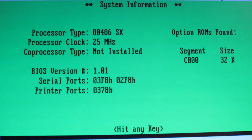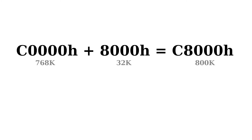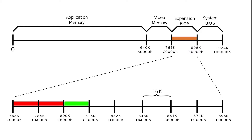We know the mainboard is trying to load its video BIOS at C00000 and we know it is 32 K large. This means we have to put the XT IDE BIOS at an address that doesn't intersect with the video BIOS address space. C00000 plus 8000 (which stands for 32 K) equals C80000, or 800 K in other words. So our ROM will be available at the 800 KB address.